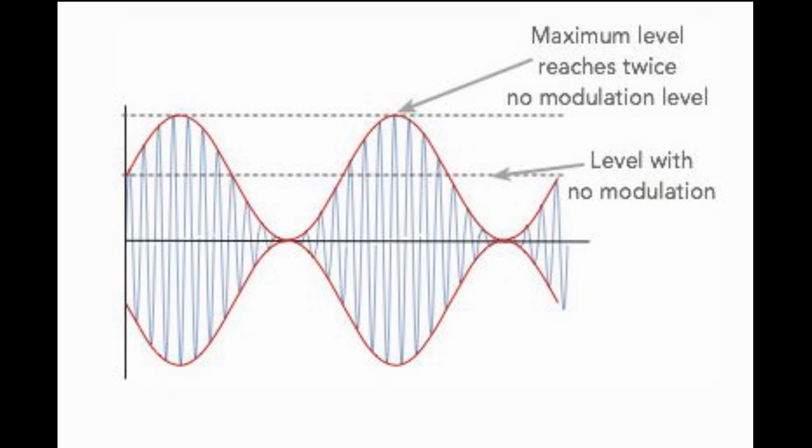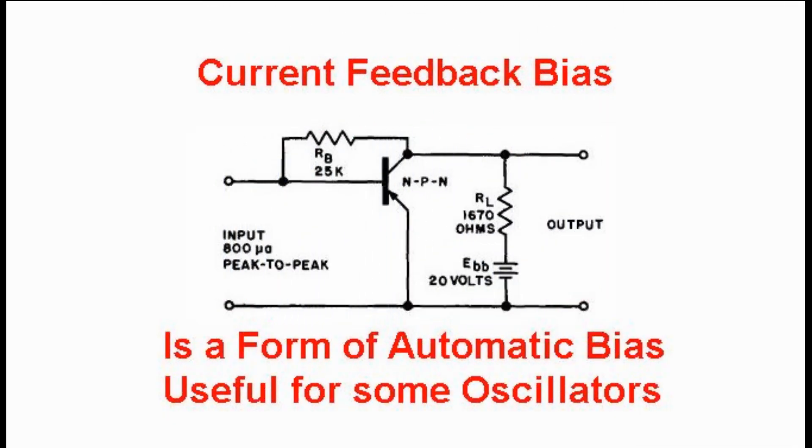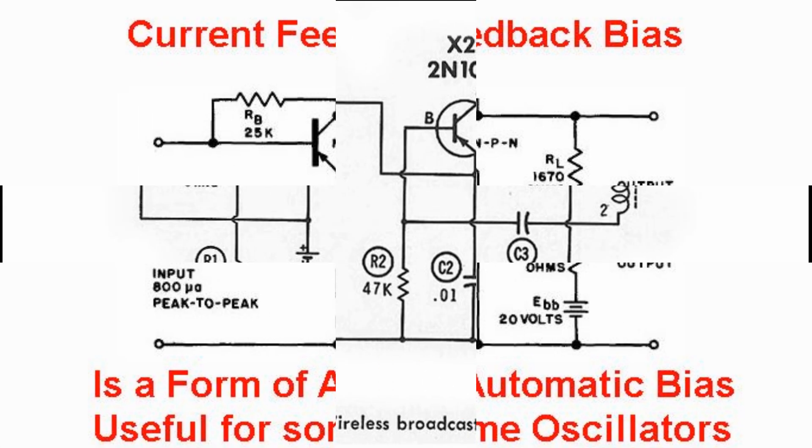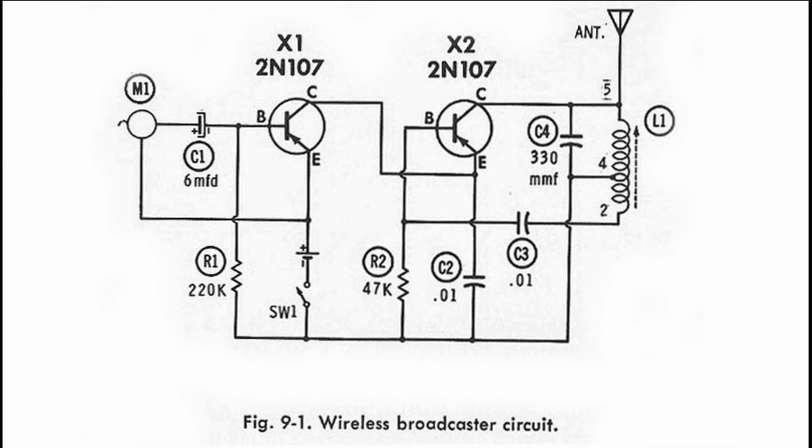Self bias or automatic bias is the best method to keep an oscillator going during these conditions. With random germanium transistors like we've been trying, it's virtually impossible to come up with one set of values that satisfies everything. Thus, a variable resistor or potentiometer may be warranted in the R1 position.